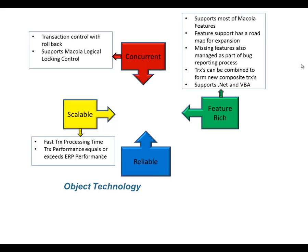You can also combine transactions together to form a new composite transaction. For example, POP reporting does not have the concept of a scrap report, so if you combined an inventory issue with an inventory report and linked those transactions together, you can create a whole new transaction that never existed in Macola before. The objects can be used either in .NET Visual Studio or they can be called from VBA, which I'll show in a future video series.